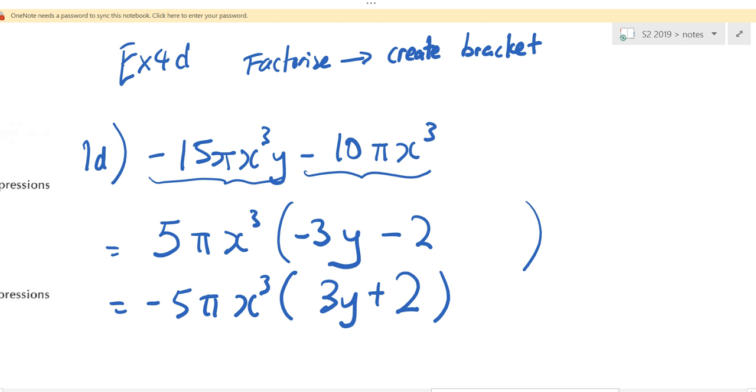Okay, this one. So what do I mean? I try. This one. Negative 5 times 3, what do I get? How do I get a negative 5? Because over here there's negative, there's negative. Both got negative. What does it mean? I can take out the negative, put outside. Like factorize negative.